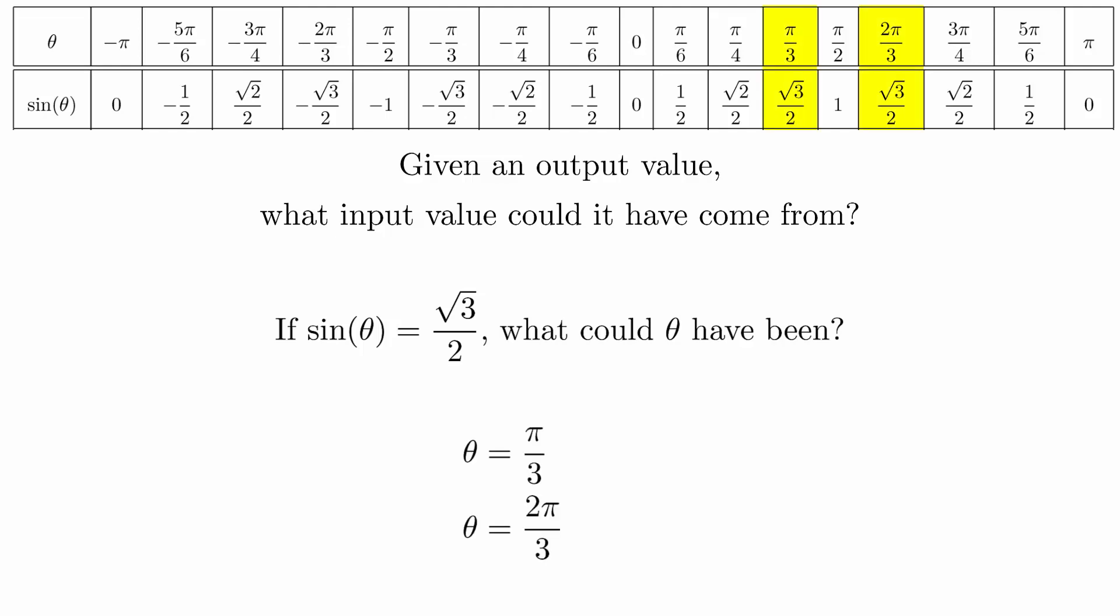By looking at the chart, we can see that pi over 3 and 2pi over 3 are both possible values of theta. But because of the periodicity of the sine function, we know that if we add or subtract multiples of 2pi to these, we will get even more values.